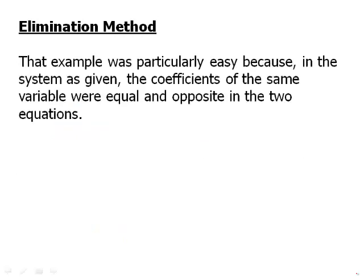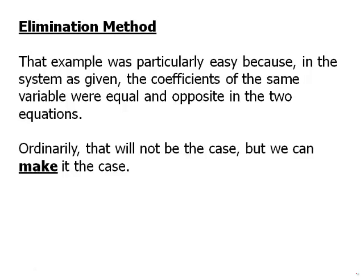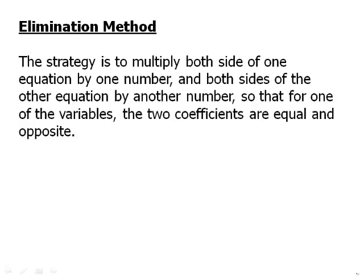That example was particularly easy because in the system as given, the coefficients of the same variable were equal and opposite in the two equations — so it was almost handed to us on a silver platter. Ordinarily it will not be the case, but we can make it the case. The strategy is to multiply both sides of one equation by one number and both sides of the other equation by another number, so that for one of the variables the two coefficients are equal and opposite — so that when we add, they will cancel and we will eliminate that variable.